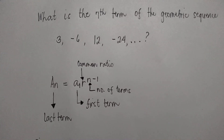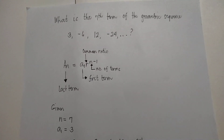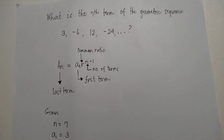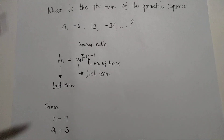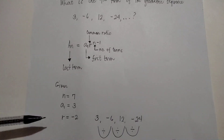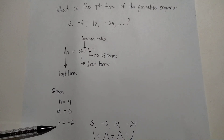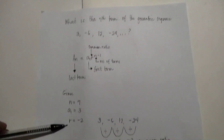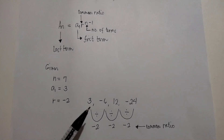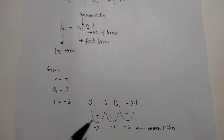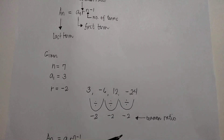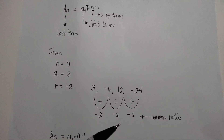First, we are going to identify the given. Since we are asked to find the seventh term and the first term is given, that means there are seven terms, so n equals 7. a sub 1, the first term, is 3. The common ratio is negative 2. We simply divide two consecutive terms: negative 6 divided by 3 is negative 2, 12 divided by negative 6 is negative 2, and negative 24 divided by 12 is negative 2. So the common ratio is negative 2.